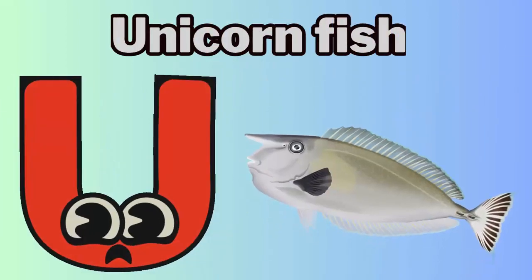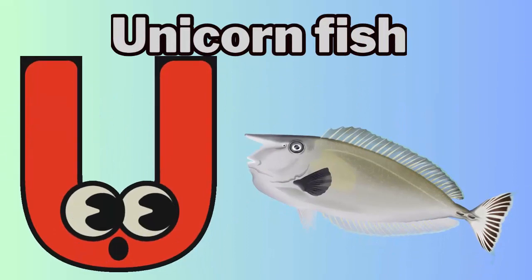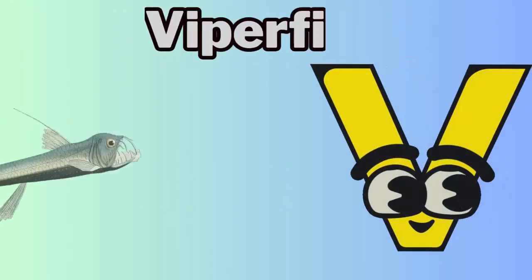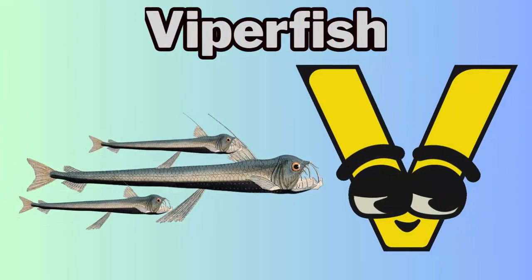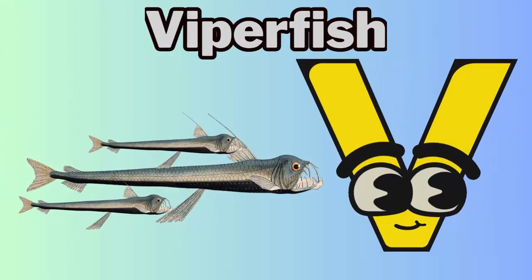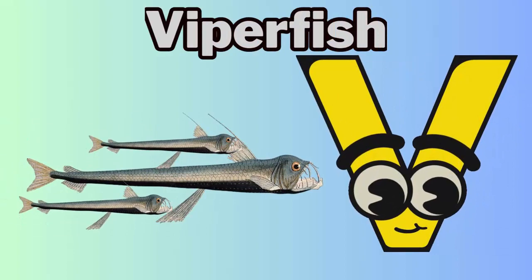U is for unicornfish. Ha, unicornfish. V is for viperfish. V, viperfish.